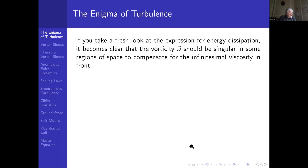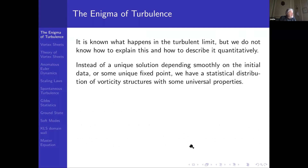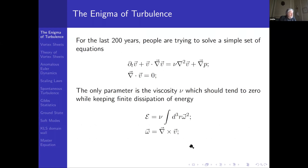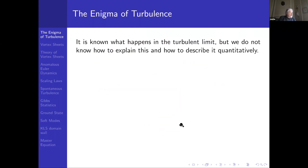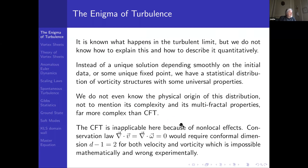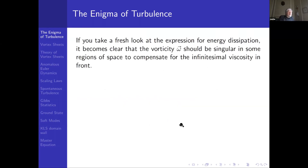Now, if we take a fresh look at the expression for energy dissipation — let me show that expression — it's nu times integral of omega squared. If you look at this expression and take a fresh look, you will immediately understand — and this could have been done 200 years ago — that vorticity should be singular in some regions of space to compensate for the infinitesimal viscosity in front. So we'll have to look for singular solutions.